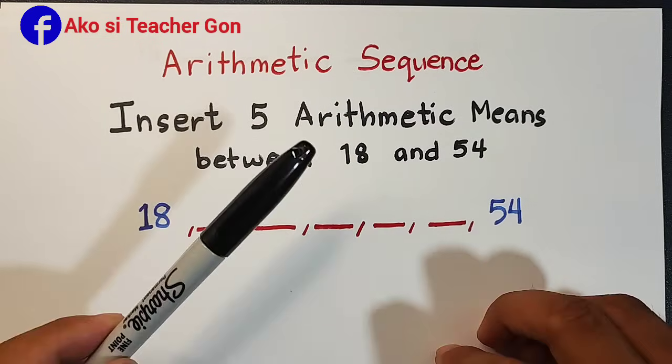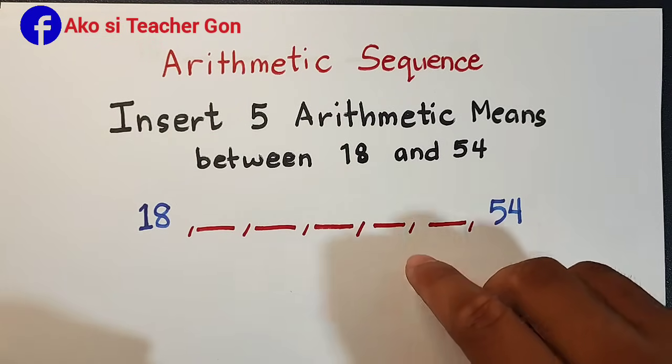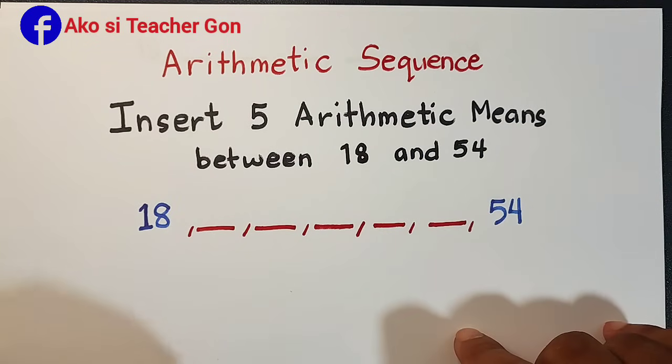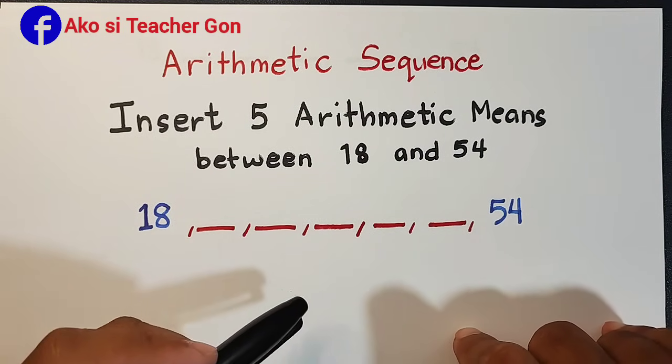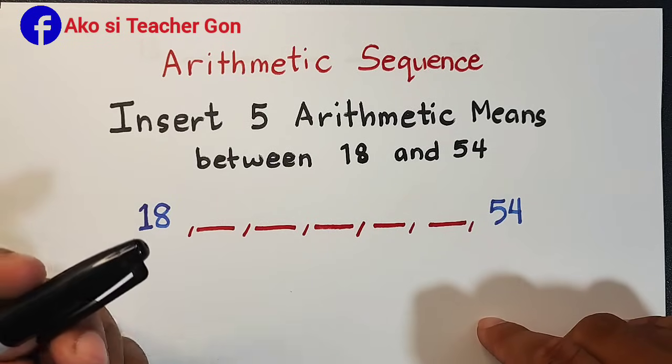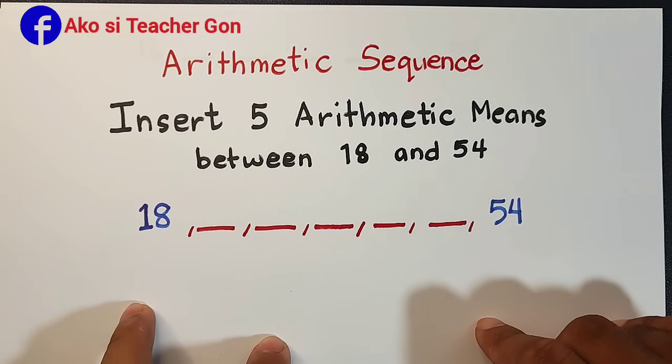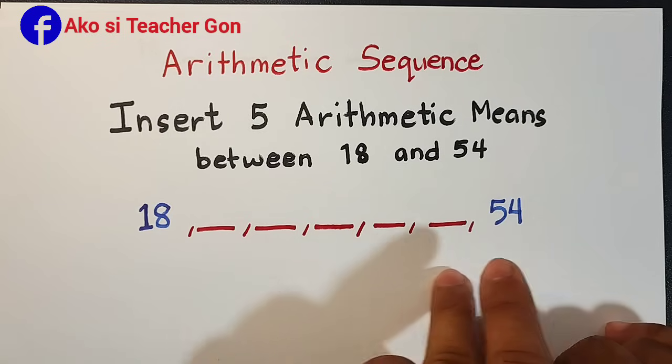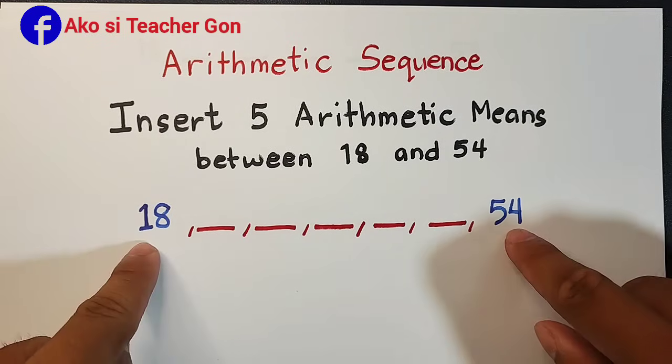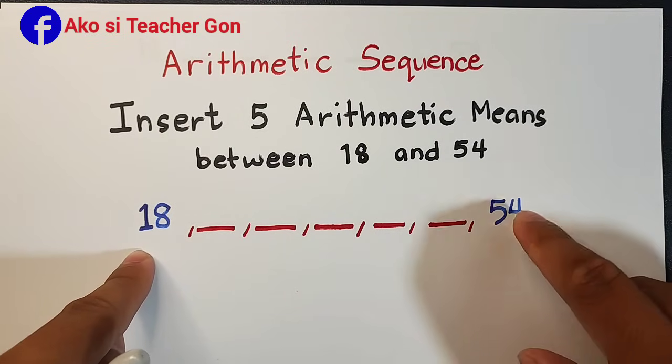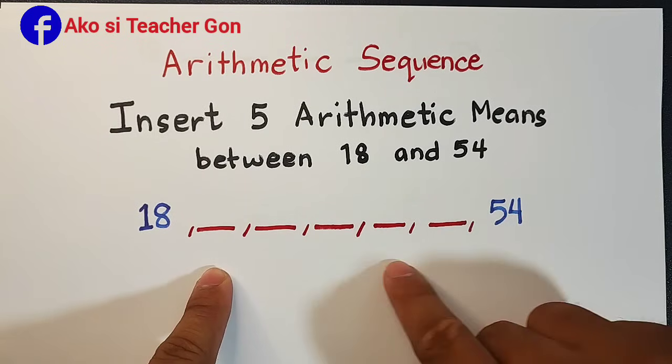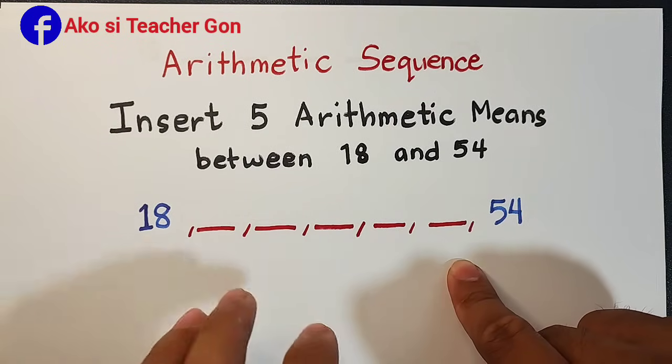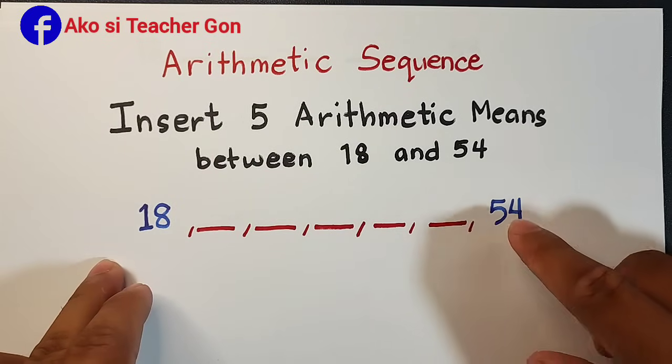So before we go further with this problem, let us talk about arithmetic means. Arithmetic means are numbers that are between 2 extremes of a given arithmetic sequence. Like this example, we are given the extremes 18 and 54 and we will try to insert 5 different numbers or 5 arithmetic means between 18 and 54.